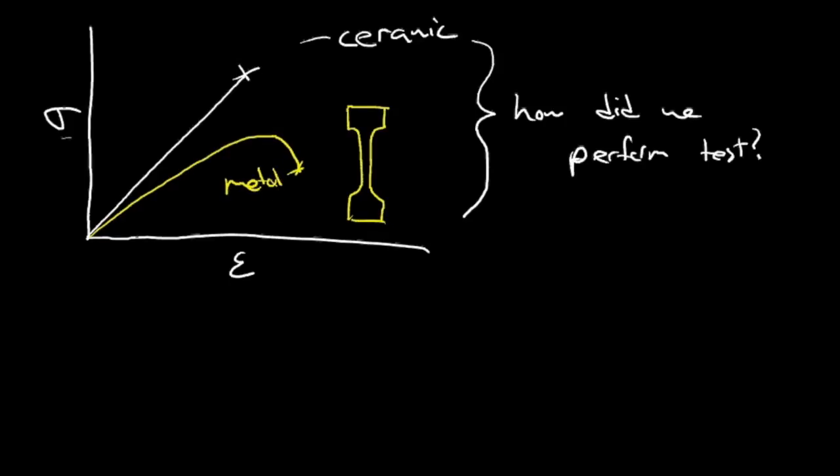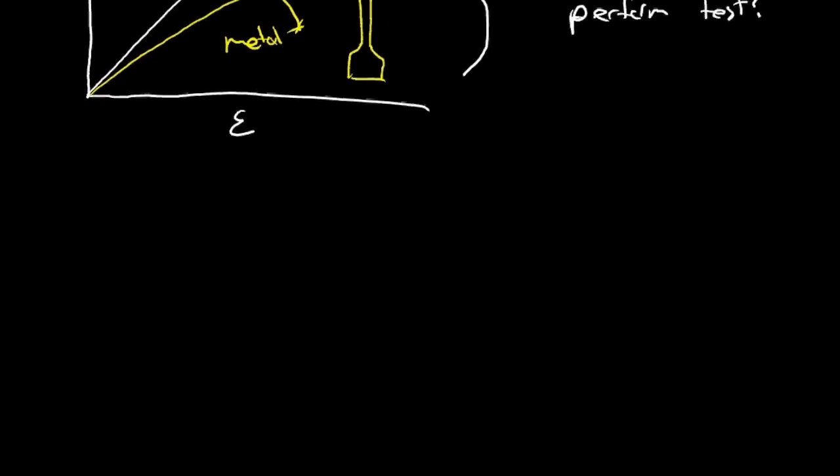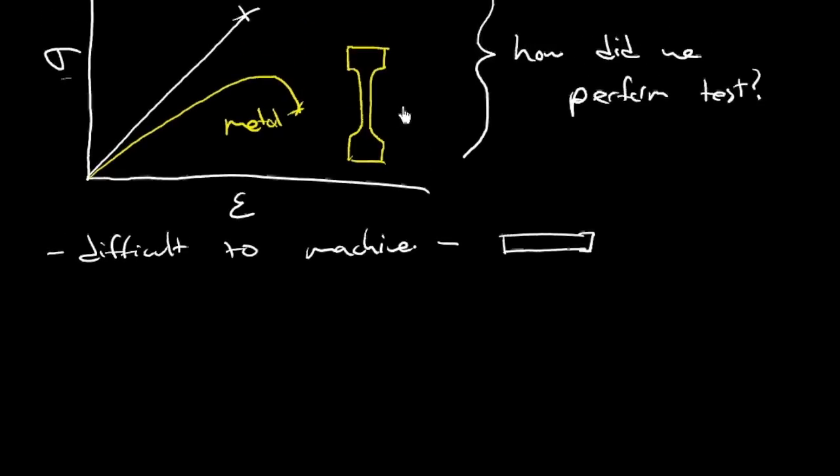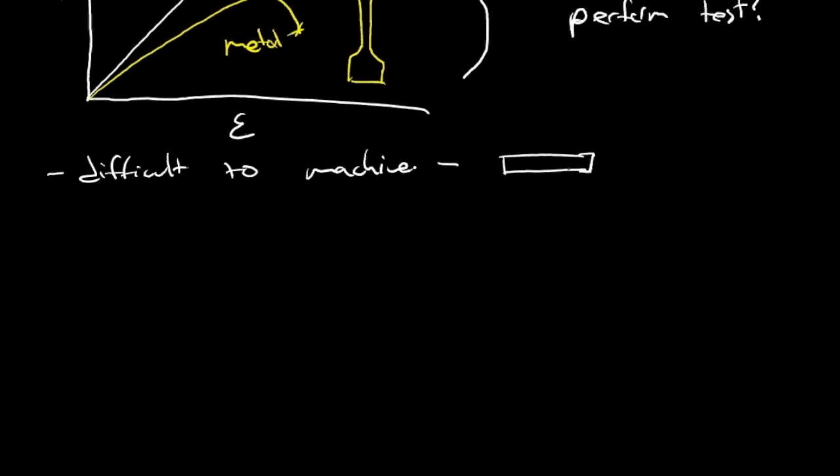Trouble is, with a ceramic, there was a few problems. First of all, the ceramic is difficult to machine. That means it's difficult to shape into that complicated tensile specimen shape, this dog bone specimen. You know, this one here. See all the other guy? So it's difficult to do that. You've got to replace your bits regularly and stuff.